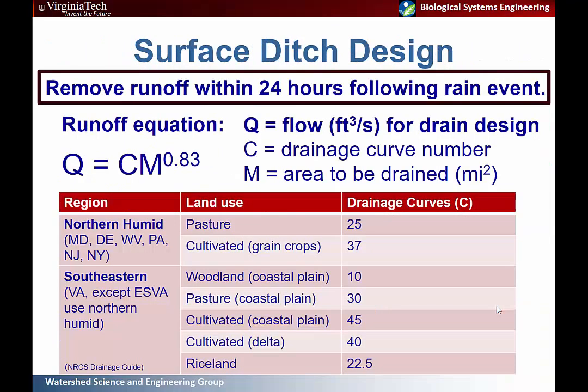When designing a surface ditch system, a key decision is the required capacity to handle drainage and remove water from the field in a timely manner. The NRCS Engineering Field Handbook has a drainage guide where flow can be calculated using the area of your field and the drainage curve number. Depending on your location and crops, most of us are in the northern humid region, with different drainage curve numbers for pasture and cultivated crops.